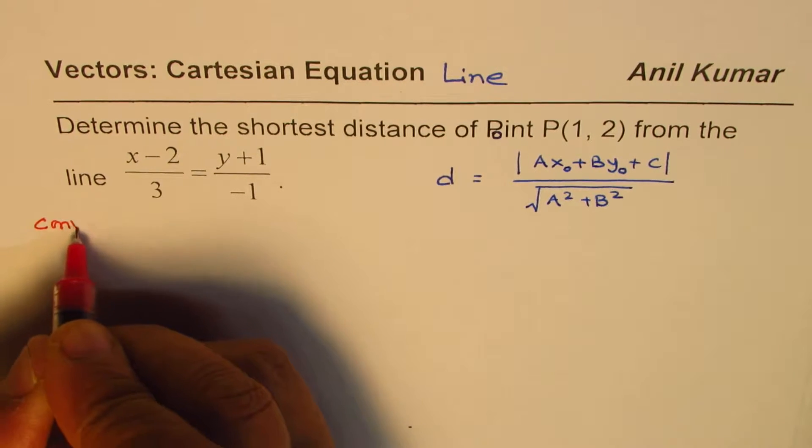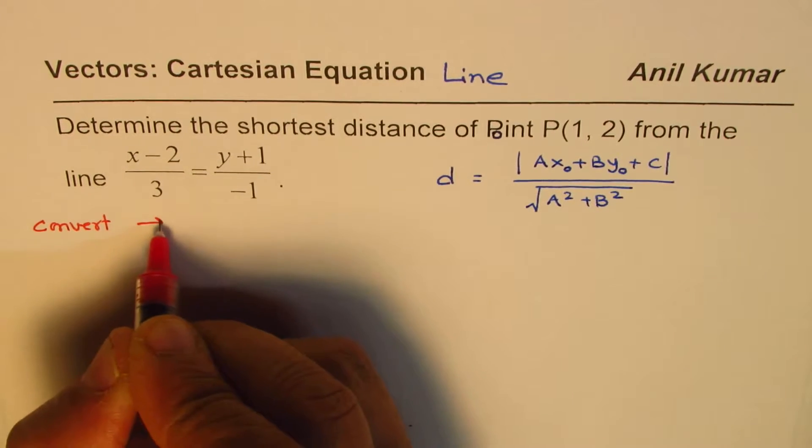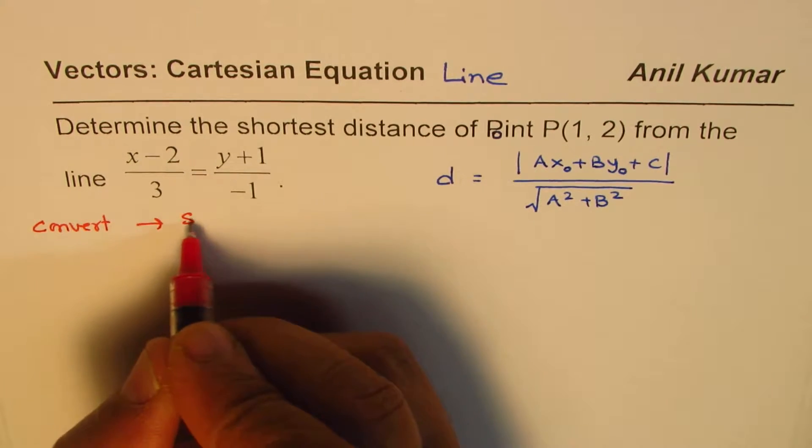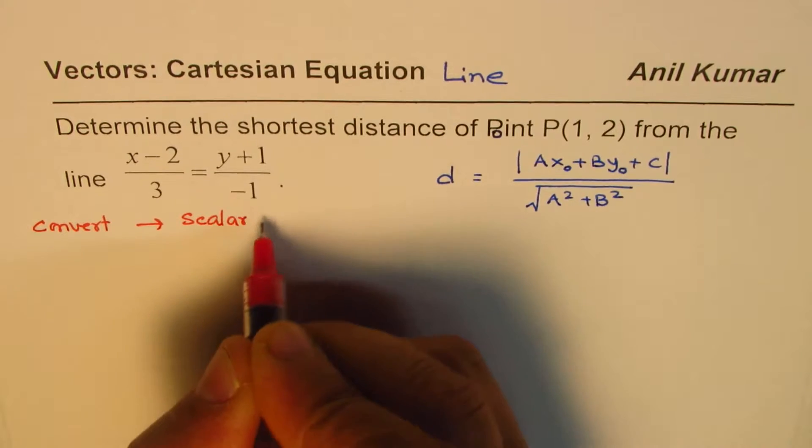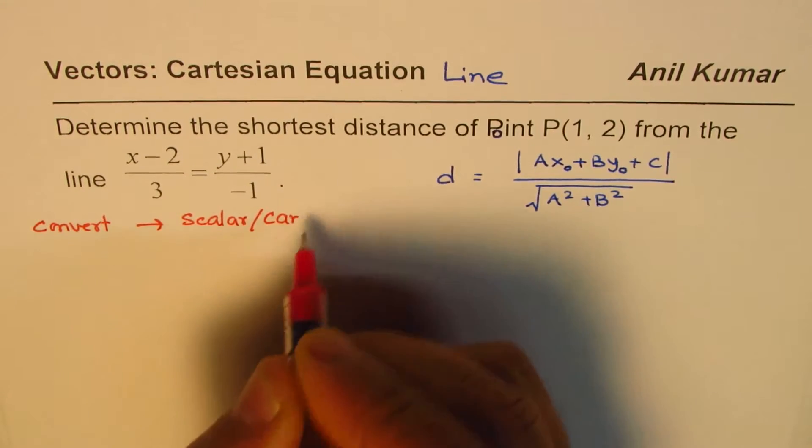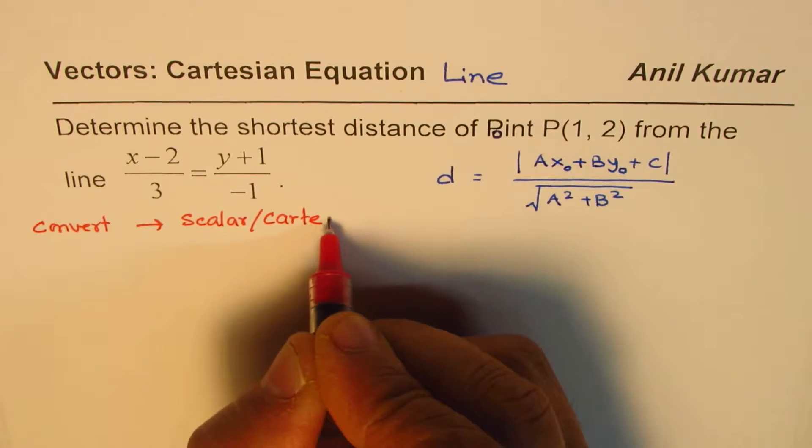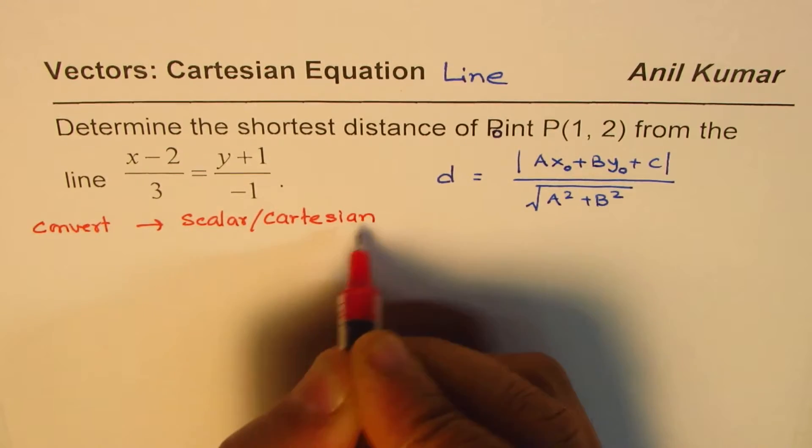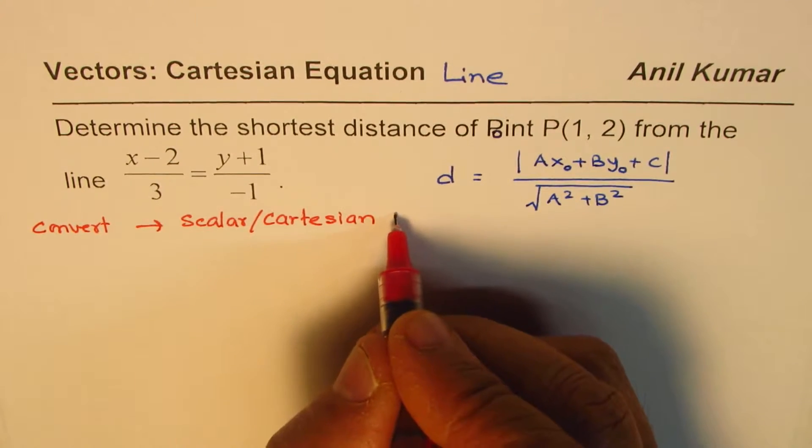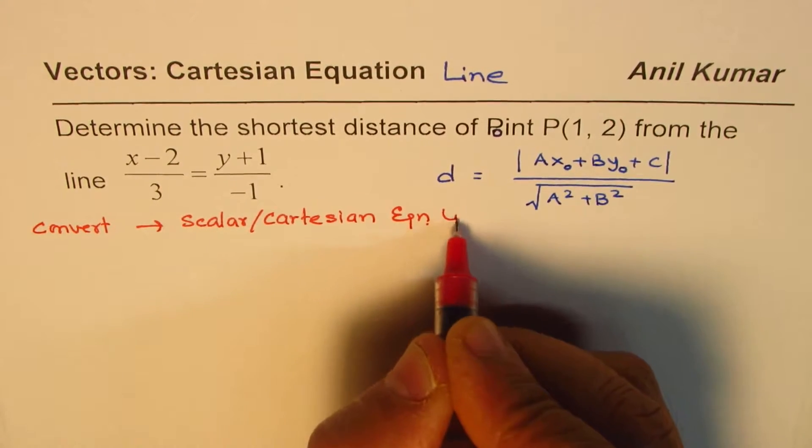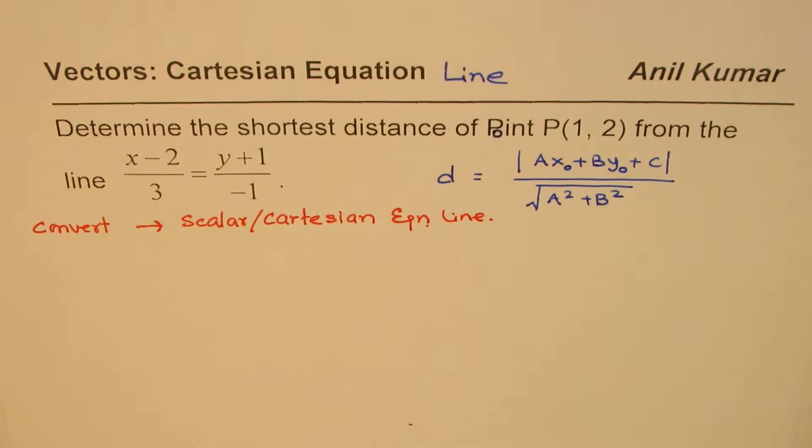So let us convert the equation to the scalar or Cartesian form of the line. Let us rewrite this equation in the form of scalar or Cartesian equation of the line. That will be our first exercise.